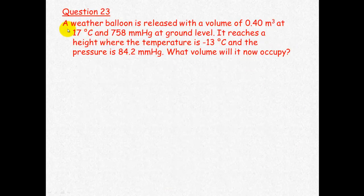Here's a question for you to have a go at. A weather balloon is released with a volume of 0.40 metres cubed at 17 degrees Celsius and 758 millimetres mercury at ground level. It reaches a height where the temperature is minus 13 degrees Celsius and the pressure is now 84.2 millimetres mercury. What volume will it now occupy?